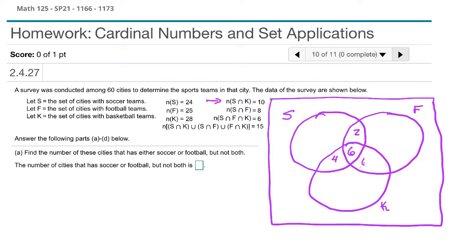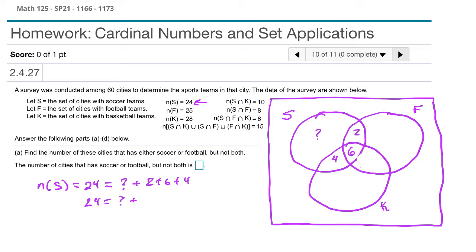Now we can figure out the soccer-only region. We know that the total number of cities in S is 24. Of those 24, we've accounted for 2, 6, and 4 — a total of 12. So our equation is 24 equals the unknown plus 12. Subtracting 12 from each side tells us we have 12 remaining in the soccer-only region.